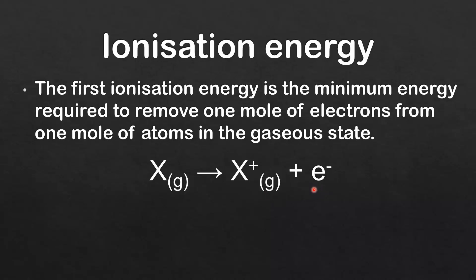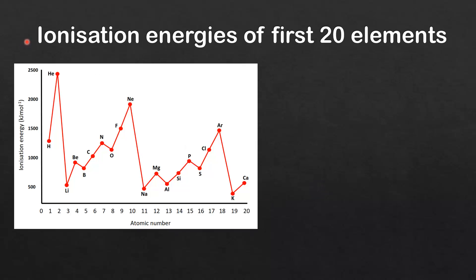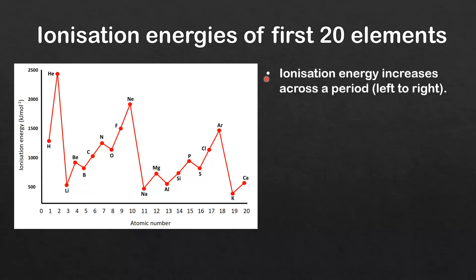Next we look at the ionization energies for the first 20 elements. In period 1, from hydrogen to helium, ionization energy increases. In period 2, from lithium to neon, the general trend is again increasing ionization energy. In period 3, from sodium to argon, the general trend is again that ionization energy increases.